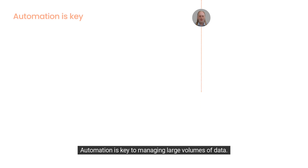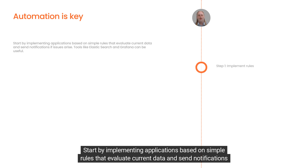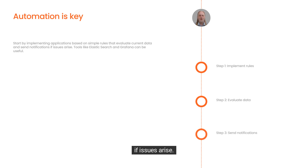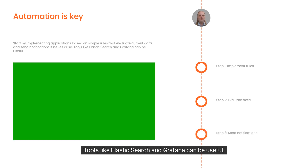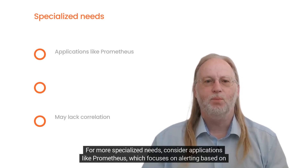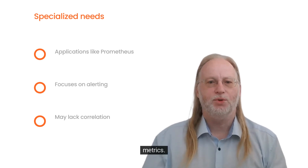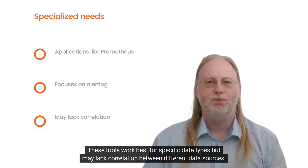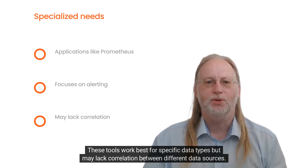Automation is key to managing large volumes of data. Start by implementing applications based on simple rules that evaluate current data and send notifications if issues arise. Tools like Elasticsearch and Grafana can be useful. For more specialized needs, consider applications like Prometheus analytics, which focuses on alerting based on metrics. These tools work best for specific data types but may lack correlation between different data sources.